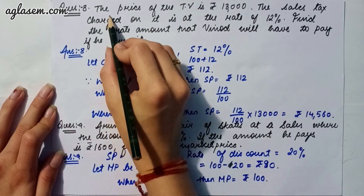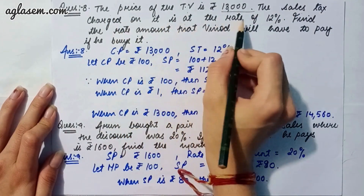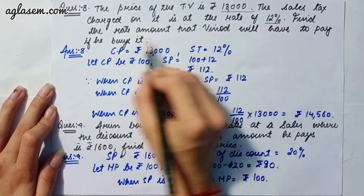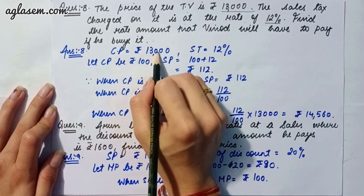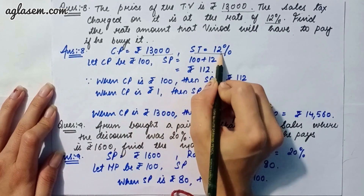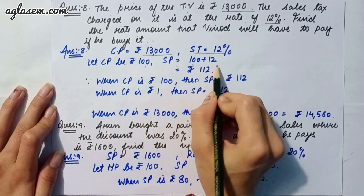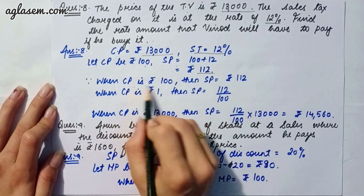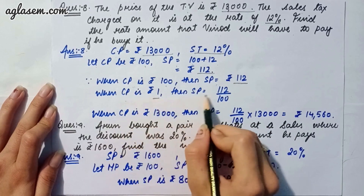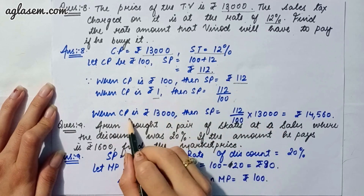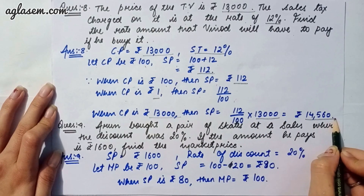Moving to our eighth question: the price of a TV is rupees 13000 and the sale tax charged is at 12 percent. We have to find the amount Vinod will have to pay if he buys it. Let CP be rupees 100, then selling price including tax is 100 plus 12, that is 112. If cost price is 13000, the amount to pay is 112 divided by 100 into 13000, giving rupees 14560.